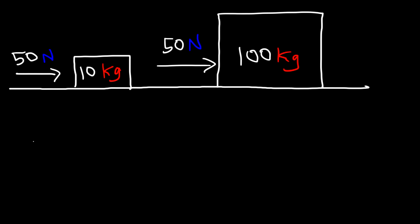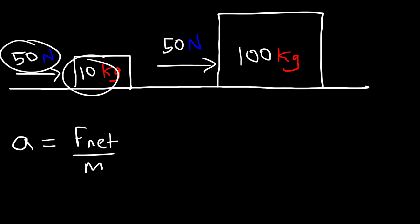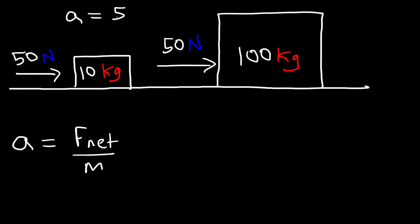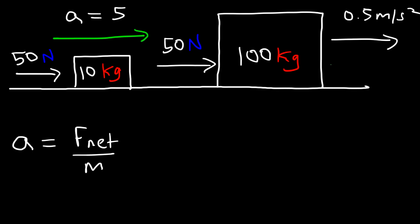So inertia is proportional to mass. Now, based on Newton's second law, net force is the product of mass and acceleration, so the acceleration is the net force divided by the mass. For the first object, it's a force of 50 divided by a mass of 10, which yields an acceleration of 5 meters per second squared. For the second mass, it's 50 divided by 100, which gives an acceleration of 0.5 meters per second squared. So as you can see, the small object has a very large acceleration, while the large object has a small acceleration.